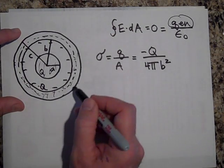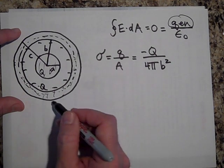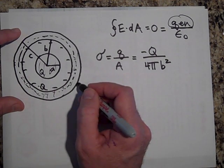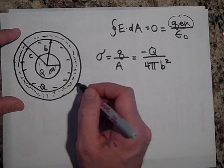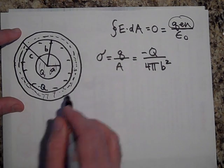The outer surface, since it was grounded, has no sigma at all. It has no charge density at all.